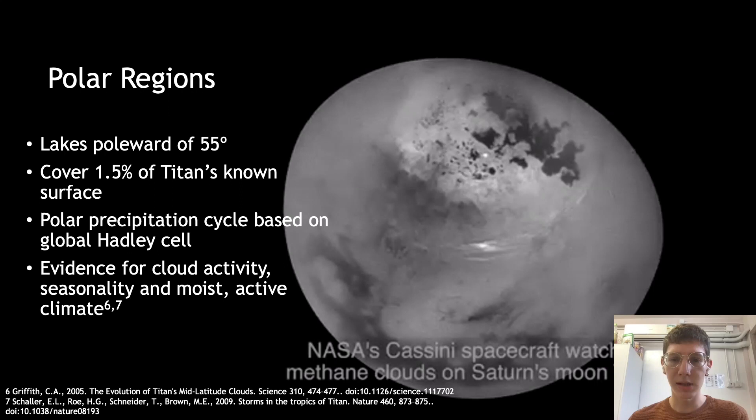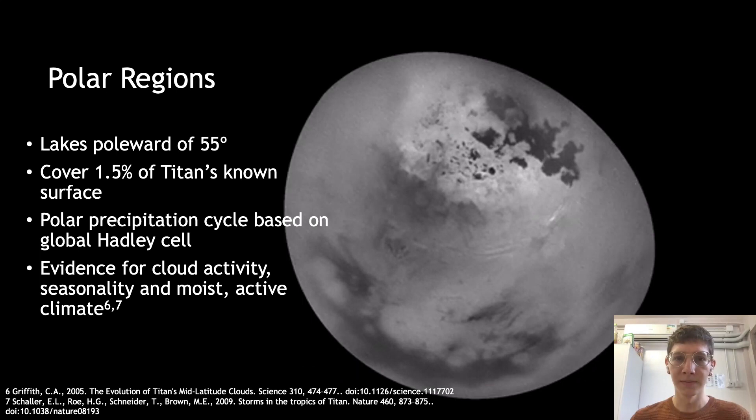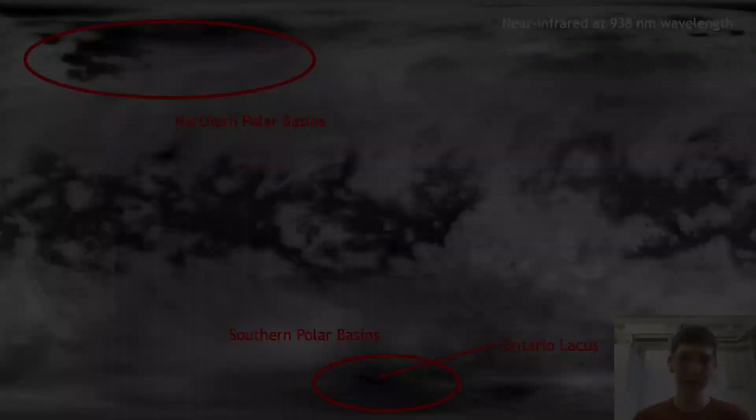Both Cassini and ground-based observations detected tropospheric cloud activity at southern mid-latitudes, as well as cloudiness over the pole. This suggests the presence of high moisture content, precipitation, and sustained surface liquids.